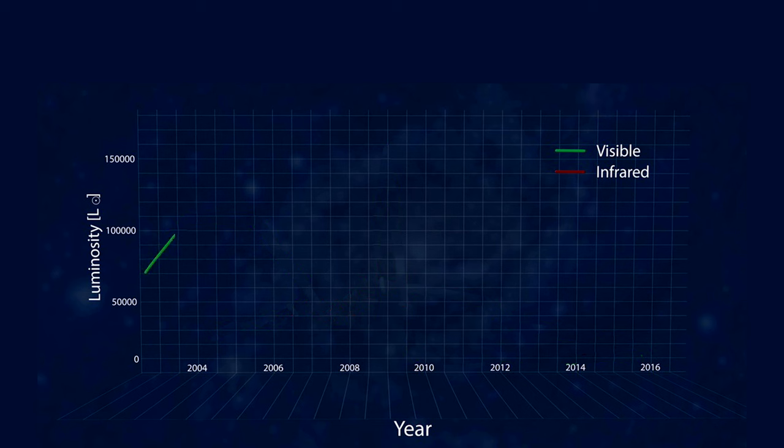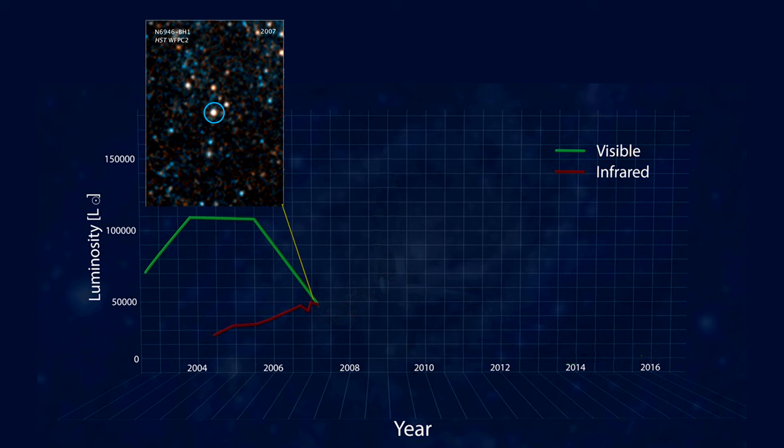Here's a graph of the star's luminosity in visible and infrared light over time. In 2007, Hubble took this picture of the star. In 2009, the star shot up in brightness to become over one million times more luminous than our Sun for several months.